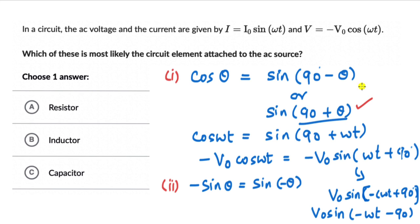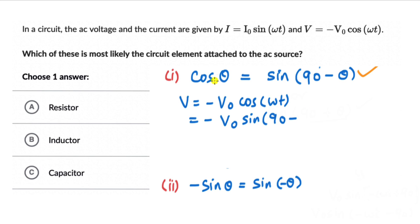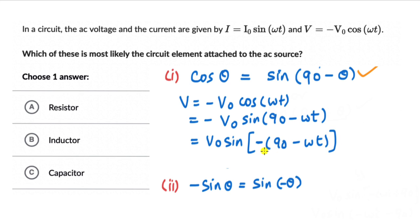Now using the identity cos θ = sin(90° − θ), we write −V₀cos(ωt) = −V₀sin(90° − ωt). Applying −sin θ = sin(−θ), this becomes V₀sin(−(90° − ωt)) = V₀sin(ωt − 90°). Now we can compare the two functions clearly.